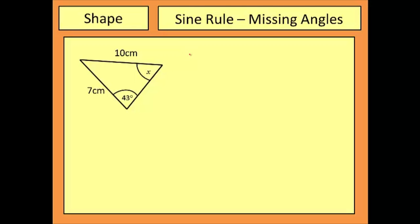Okay, let's have a look at an example. So in this one I'm going to start off by labeling everything up. This angle of 43 degrees here I'm going to call A. That means that the corresponding side is up here, the 10 centimeters. Angle X, which is what we're trying to find, I'm going to call B. And that means that the 7 centimeters opposite becomes side b.